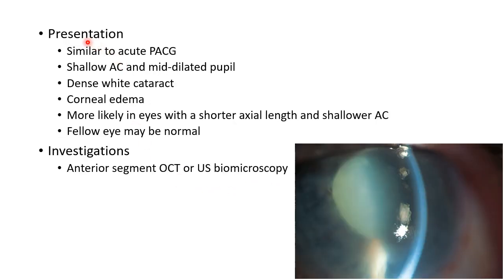Coming to the presentation of phacomorphic glaucoma: the clinical features are similar to acute primary angle closure glaucoma. The patient presents with shallow anterior chamber and mid-dilated pupil. There will be a dense white cataract and corneal edema, as you can see in this picture. It is more likely to occur in eyes with a shorter axial length and shallower anterior chamber.